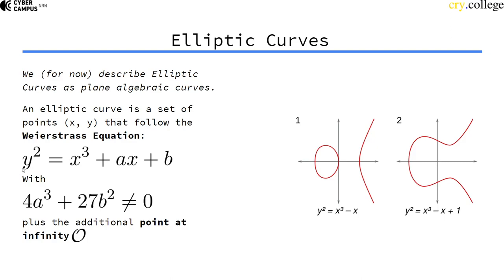So every elliptic curve can be expressed in this so-called short Weierstrass equation. There are also other equivalent equations, but you can express them all like this.